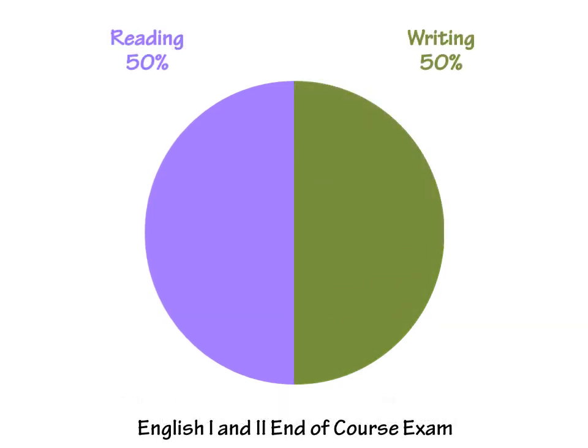You probably already know that the end of course exam is made up of two parts: reading and writing. Each of those parts is weighted the same. The reading portion will be 50% of your final score and the writing portion will also be 50% of your final score.